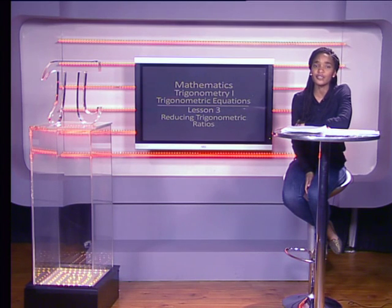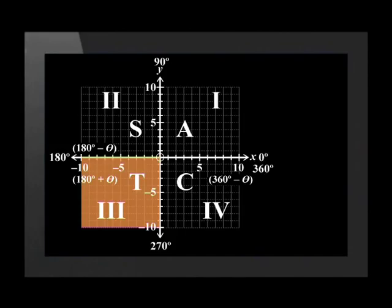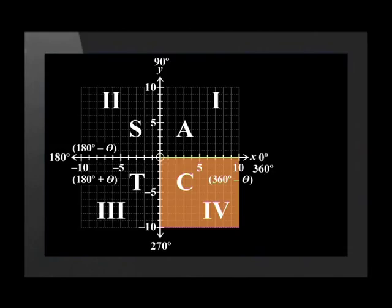This looks a little confusing now, but as we do it more, it will become second nature to you. If the angle is between 180 and 270 degrees, it falls into the third quadrant. To reduce it, we let the angle equal 180 degrees plus theta and solve for theta. If the angle is between 270 and 360 degrees, it falls into the fourth quadrant. We let this angle equal 360 degrees minus theta and solve for theta.